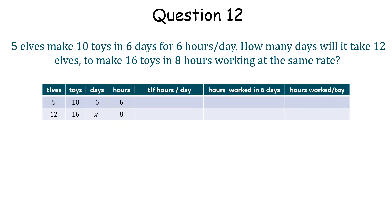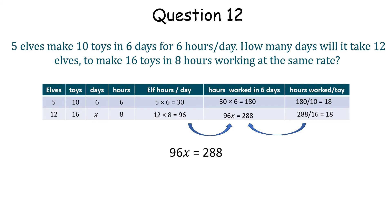5 elves working for 6 hours a day is 30 elf hours worked a day, and over 6 days this is a total of 180 hours worked. If 10 toys are made in 180 hours, then it takes 18 hours per toy. Now with 16 toys, and it takes a total of 18 hours to make a toy, this is a total of 288 hours worked. The elves work 8 hours a day now, giving us 12 times 8, which is 96 hours worked a day. Therefore, making and solving a similar equation, we get that 12 elves making 16 toys, working at 8 hours a day, takes 3 days.